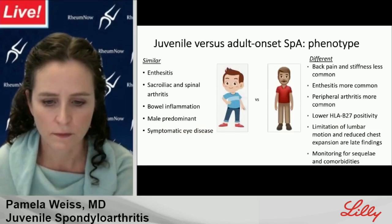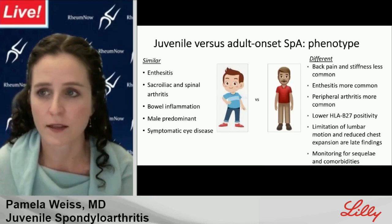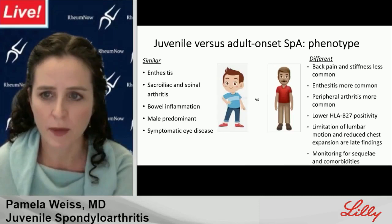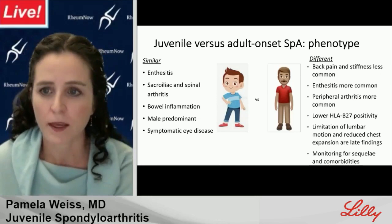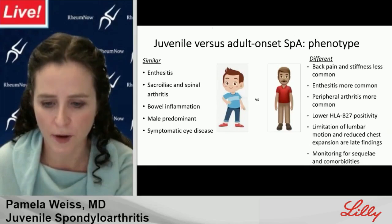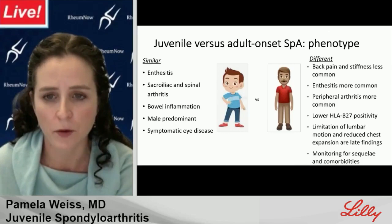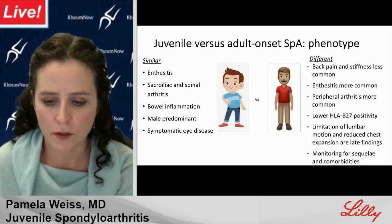Juvenile onset and adult onset disease are similar in that both have the bread-and-butter phenotype including enthesitis, sacroiliac and spinal arthritis, bowel inflammation, male predominance, and symptomatic eye disease. They differ in that back pain and stiffness are less common in children. Peripheral enthesitis and peripheral arthritis are actually much more common in children than in adults. The most common arthritis pattern is asymmetric involvement of the lower extremity joints, typically in an oligoarticular pattern — fewer than five joints affected. Less than one-third of children have polyarticular involvement. Ankle involvement and tarsitis are both tremendously common.